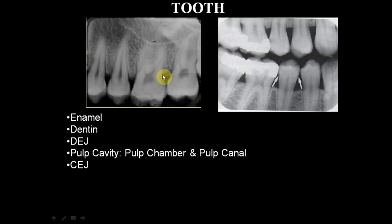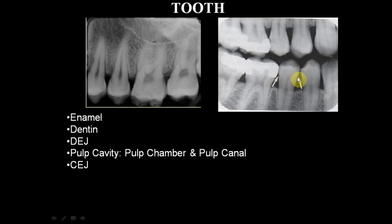The cemento-enamel junction is located here. Cementum is not well appreciated in radiographs because it is less mineralized than dentin — you can only demarcate the cemento-enamel junction. The arrows pointed out here indicate cervical burnout, which is a normal configuration. In the cervical area of some radiographs, you may see this kind of decreased x-ray absorption between the alveolar crest and the cervical region of the tooth. To differentiate this from cervical caries, look at the outline.